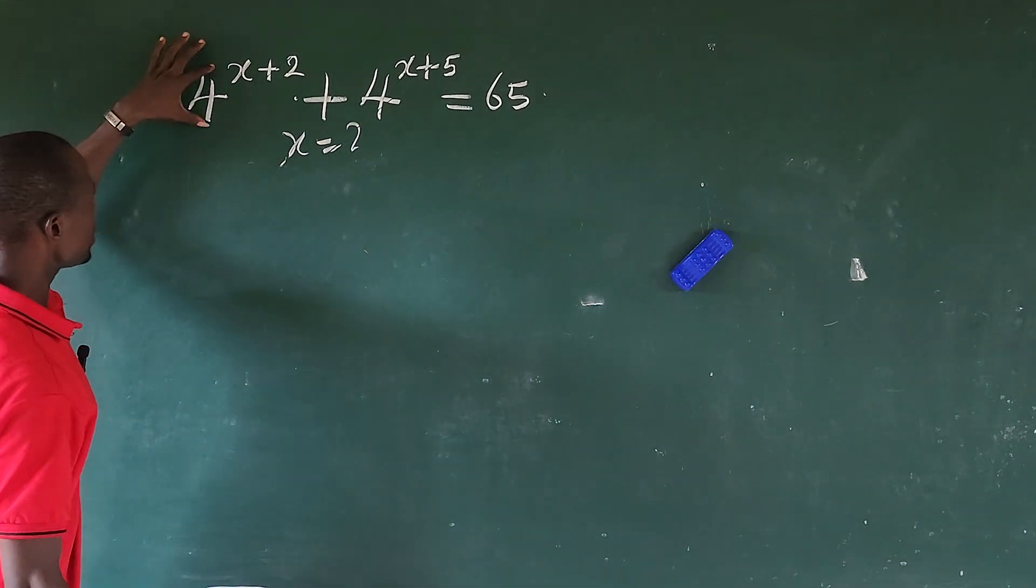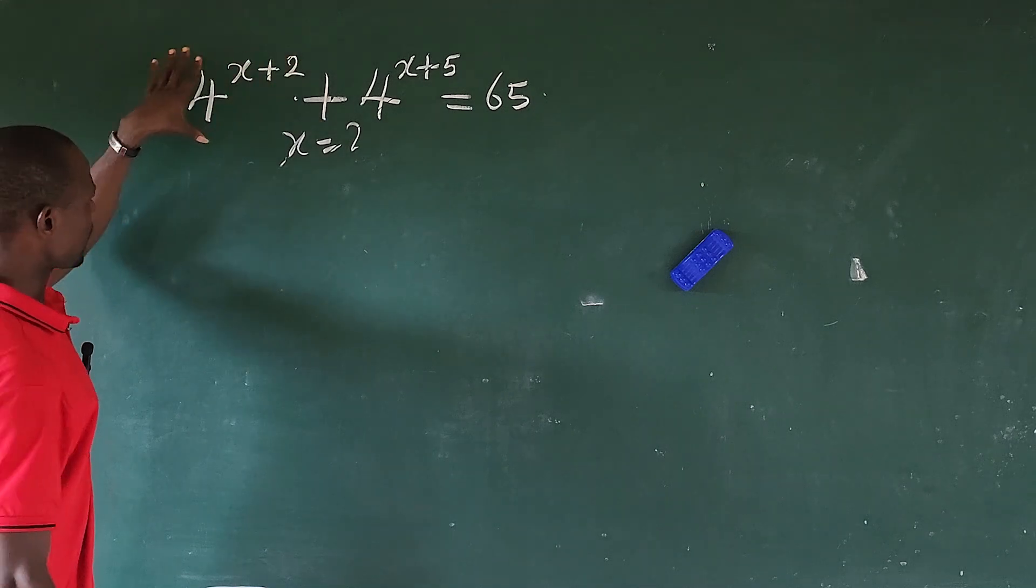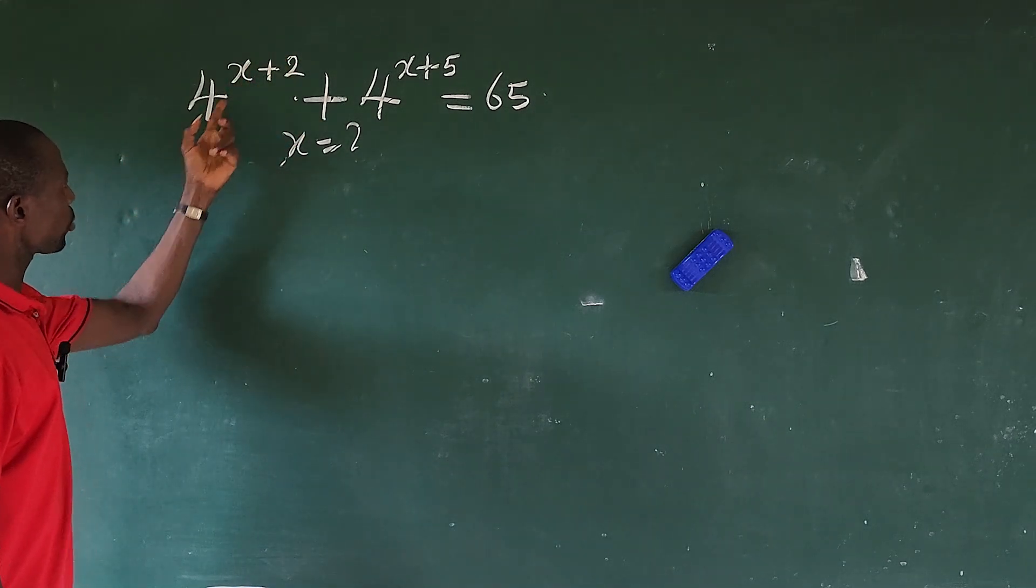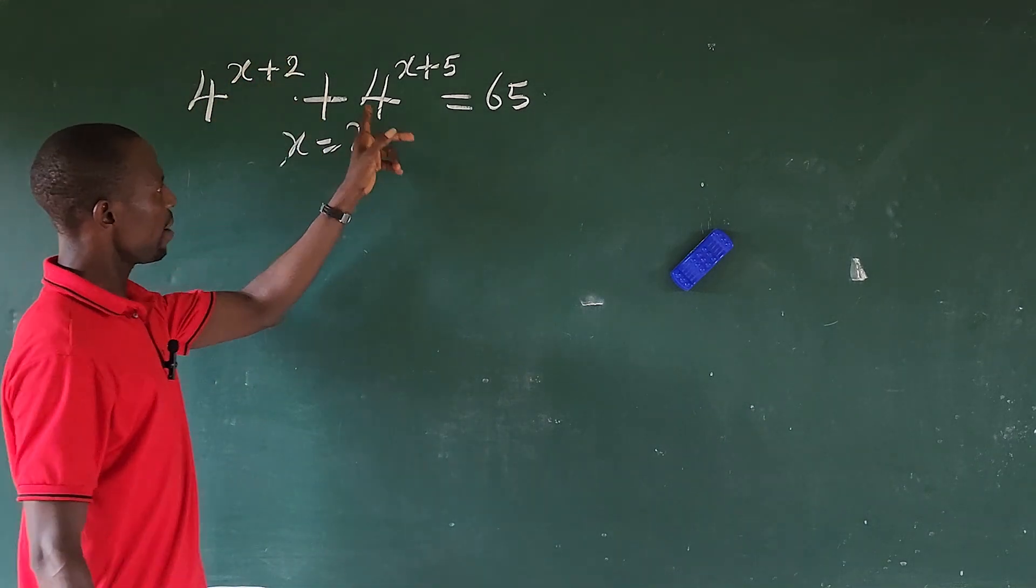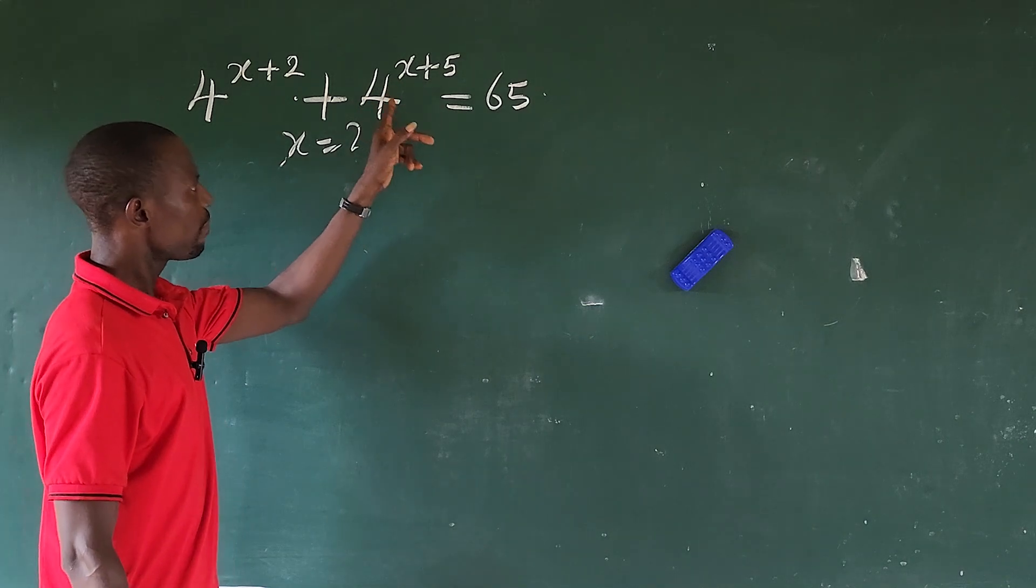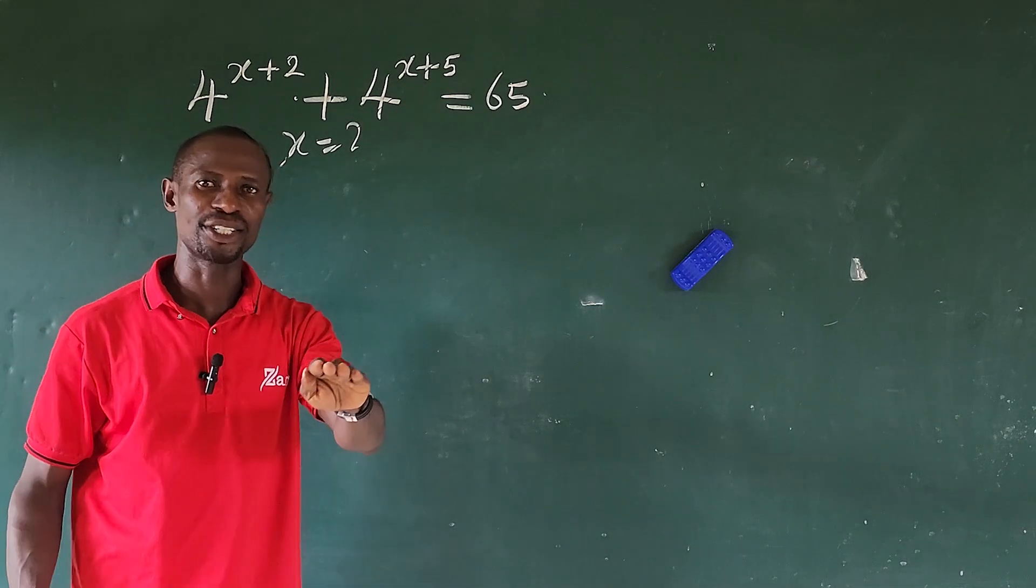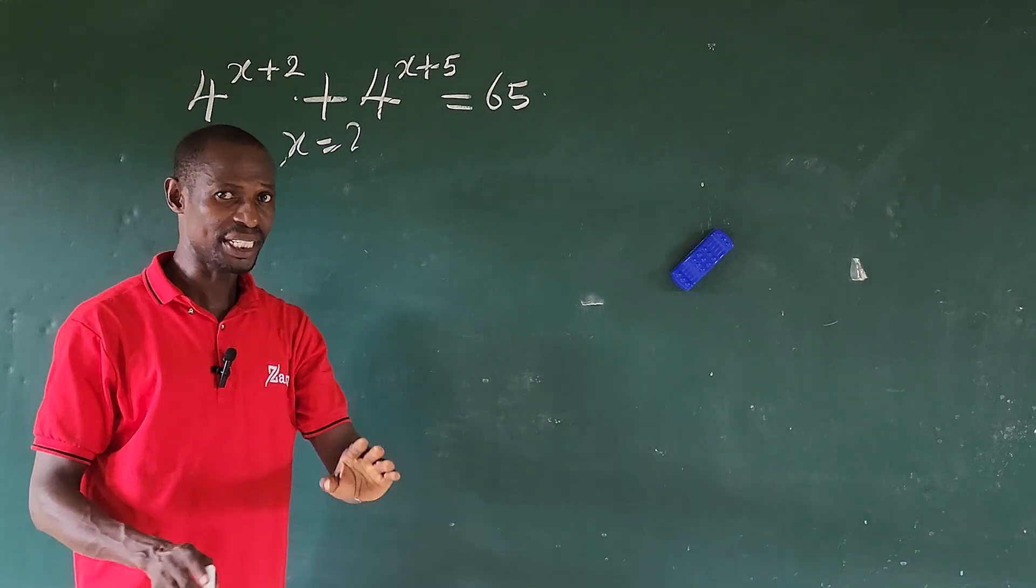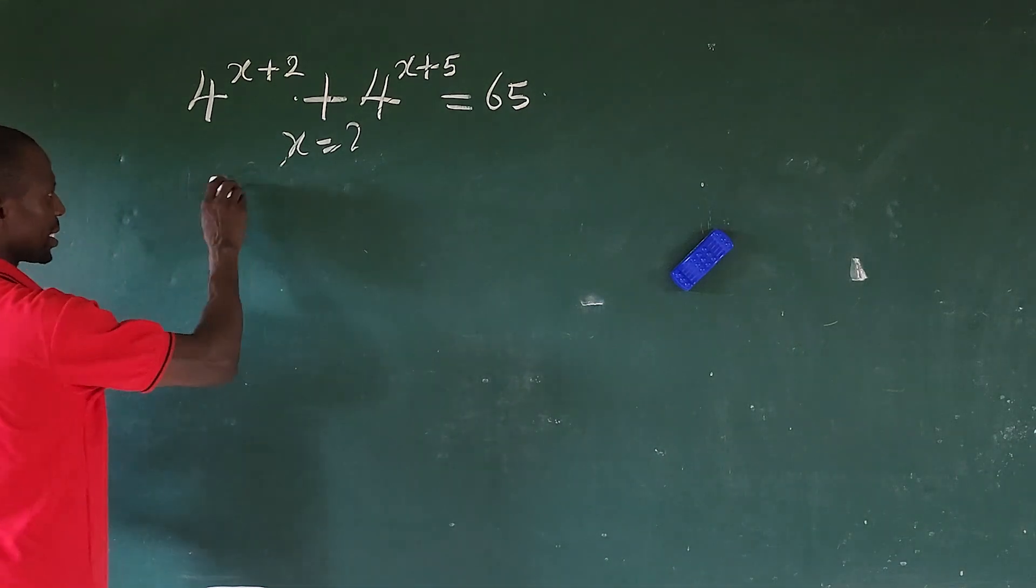I know you are used to writing this to give you 4 to the power of x times 4 to the power of 2, 4 to the power of x times 4 to the power of 5, but that is the wrong way. You'll be solving this the wrong way.